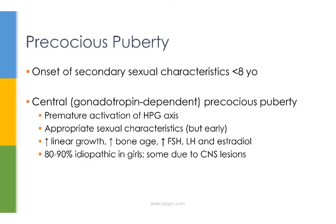First we'll be talking about central, also known as gonadotropin-dependent, precocious puberty. This kind of puberty is due to a premature activation of the HPG axis, also known as the hypothalamic-pituitary-gonadal axis — sometimes in females referred to as the HPO axis, replacing gonads with ovaries. This leads to a normal sequence of thelarche, pubarche, and menarche, but just at an earlier age.